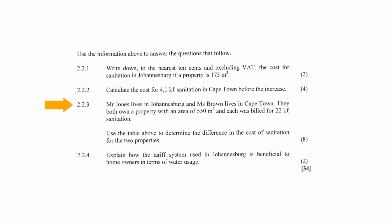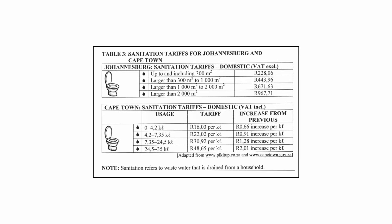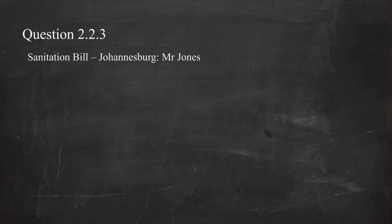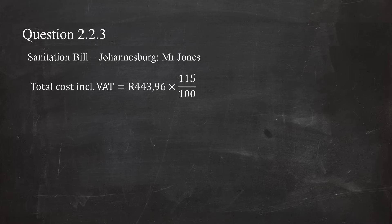In question 2.2.3, Mr. Jones lives in Johannesburg and Ms. Brown lives in Cape Town. They both own a property of 550 square meters and each was billed for 22 kilolitres of sanitation. For Mr. Jones, properties larger than 300 square meters up to 1,000 square meters pay a flat rate of R443.96 excluding VAT. Including VAT: R443.96 multiplied by 115% divided by 100% equals R510.55. For Ms. Brown in Cape Town, since she uses 22 kilolitres, we calculate costs across three steps: Step 1 is 4.2 kilolitres at R16.03 per kilolitre, equalling R67.33. Step 2 is 3.15 kilolitres at R22.02 per kilolitre, equalling R69.36. Step 3 is 14.65 kilolitres at R30.92 per kilolitre, equalling R452.98. The total is R589.67.